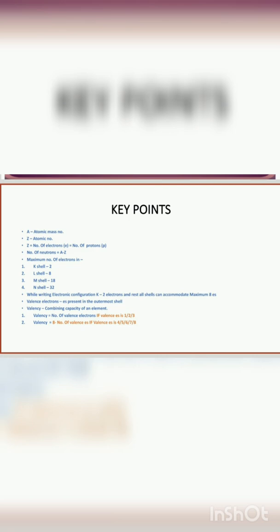The electronic configuration is written using Z, or the number of electrons. While writing the electronic configuration, we have to consider that the K shell can accommodate a maximum of 2 electrons, and the rest of the shells can accommodate 8 electrons only in Bohr structures. However, if asked for maximum capacity: K shell is 2, L shell is 8, M shell is 18, and N shell is 32 electrons.